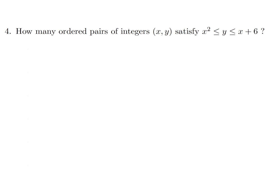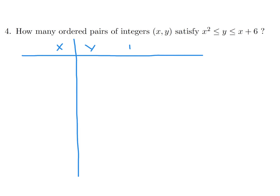How many ordered pairs of integers x, y satisfy x squared is less than or equal to y, which is less than or equal to x plus 6? I'm thinking of plotting this on a graph, but I think I'll just do it manually by plugging in numbers. They don't tell us if x is positive or negative, so I'll start with 0 and go in both directions.